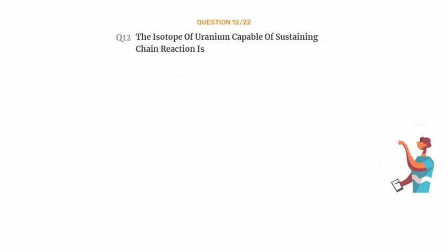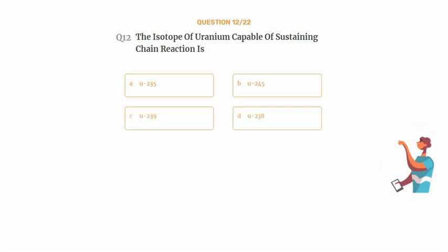Question number 12. The isotope of uranium capable of sustaining chain reaction is. Option A: U-235. Option B: U-245. Option C: U-239. Option D: U-238.